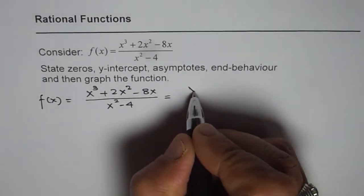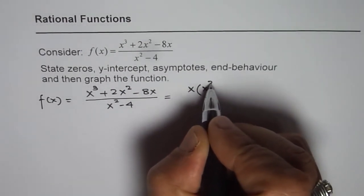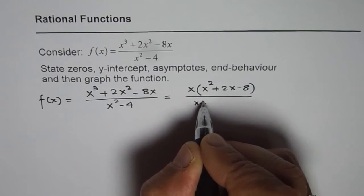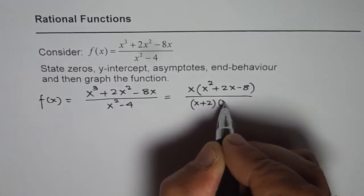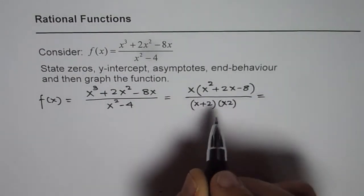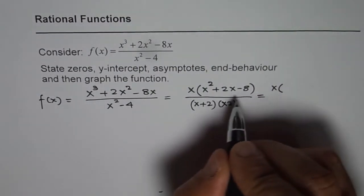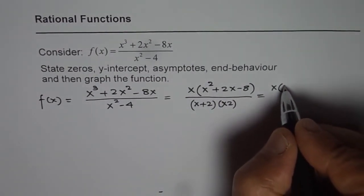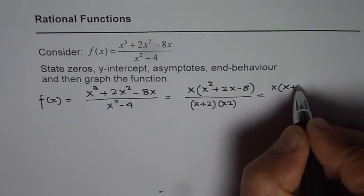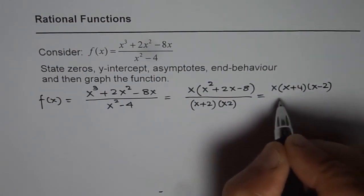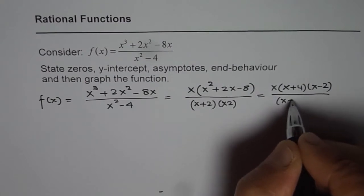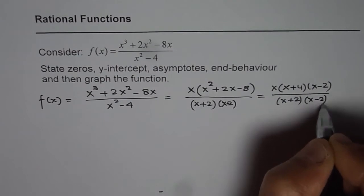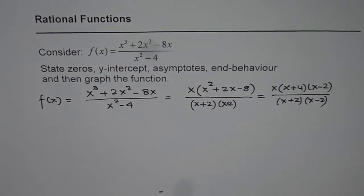It will give you a hole if we have a common factor in numerator and denominator, and a vertical asymptote if we do not. So let's factor this first. We can factor x from the numerator, which gives x(x² + 2x − 8) divided by (x + 2)(x − 2). Further, we can factor the quadratic: x(x + 4)(x − 2) divided by (x + 4)(x − 2). So that is the factored form.